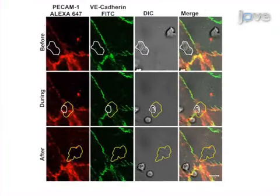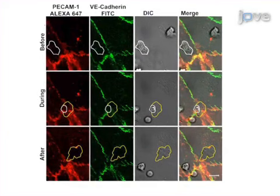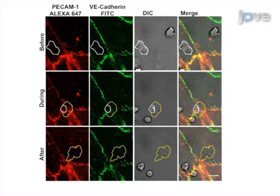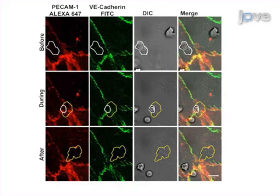Ultimately, the PMNs are visualized using a confocal laser scanning microscope. After a few minutes, leukocytes appear, adhere, and transmigrate. The experiment can be stopped at any desired moment.